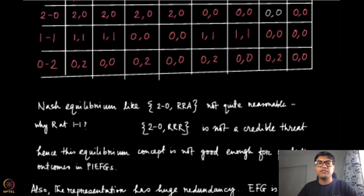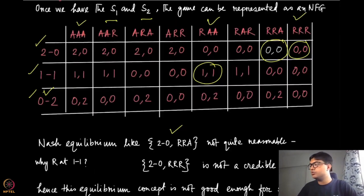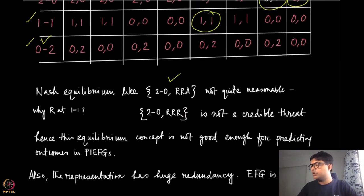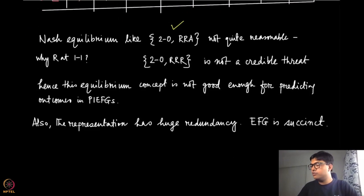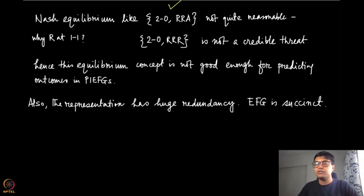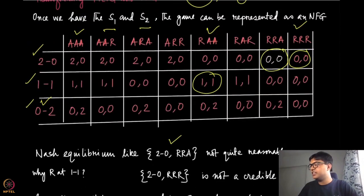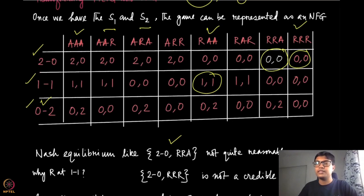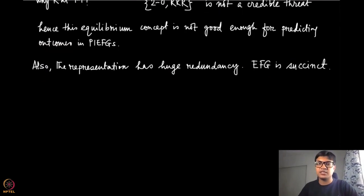For this kind of game where information is completely available to all players at every stage, we will not transform them into normal form games. Instead we will find other solution concepts or equilibrium concepts that are more appropriate for this setting. I would also remark that transforming the extensive form game into a normal form game introduces huge redundancy — the strategy space for all players blows up considerably. With more levels and more players it would blow up even more easily, whereas the extensive form game (EFG) is a much more succinct representation of the game.